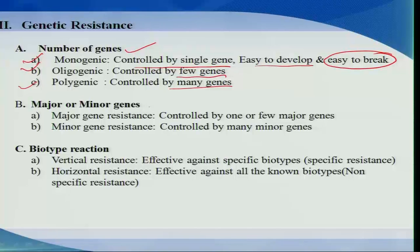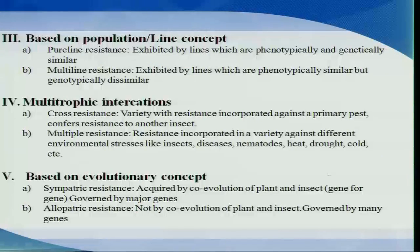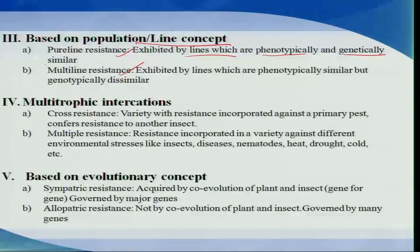Based on the type of genes governing resistance, we can also classify it as major gene resistance or minor gene resistance. Based on biotype reaction, we have either vertical resistance or horizontal resistance. Vertical resistance is effective against certain specific biotypes, also called specific resistance. Horizontal resistance is resistant to all known biotypes. Based on plant population or line concept, we have pure line resistance — exhibited by plant lines that are phenotypically and genotypically similar — and multi-line resistance, exhibited by plants that are phenotypically similar but genotypically dissimilar.